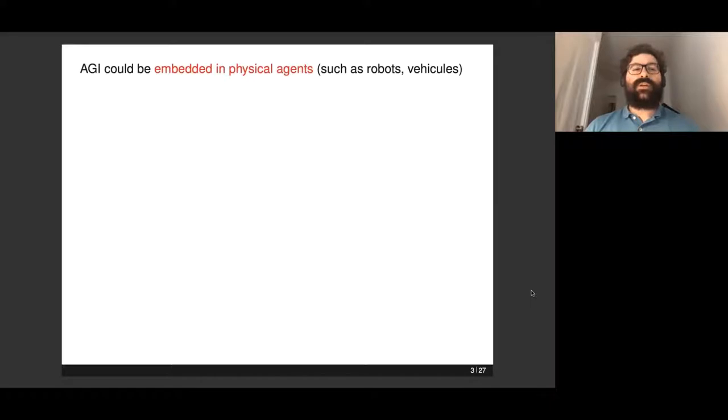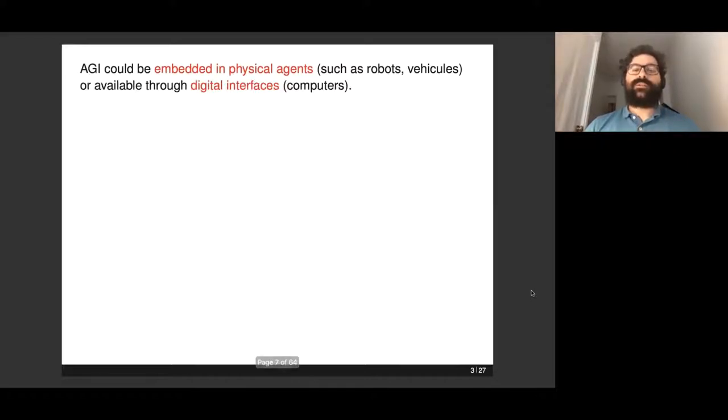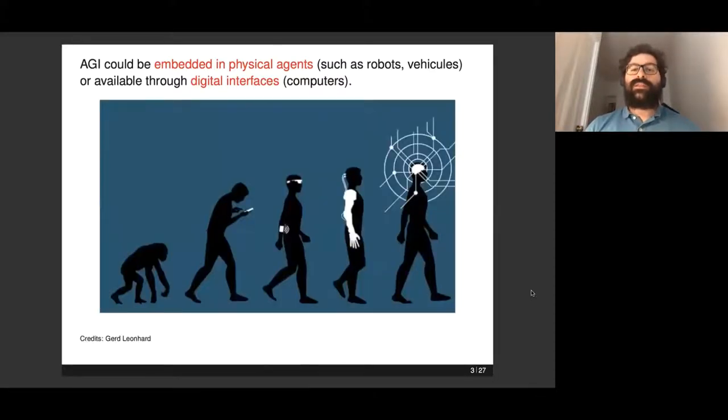I should also stress that AGI could be embedded in physical agents—robots or autonomous vehicles, for example. But it could also just be an entity which is interfaced through computers or smartphones. This is actually the way most of us interact with AI systems nowadays. You speak to your phone, you have interactions with tablets and computers towards digital systems.